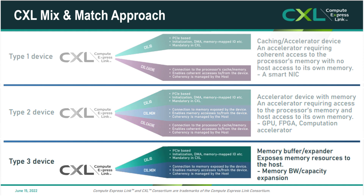A Type 3 device allows any memory attached to the CXL device to be coherently accessible by the host. The FPGA can still provide valuable benefits by allowing implementation of special FPGA logic, such as unique compression/decompression or encryption/decryption algorithms.